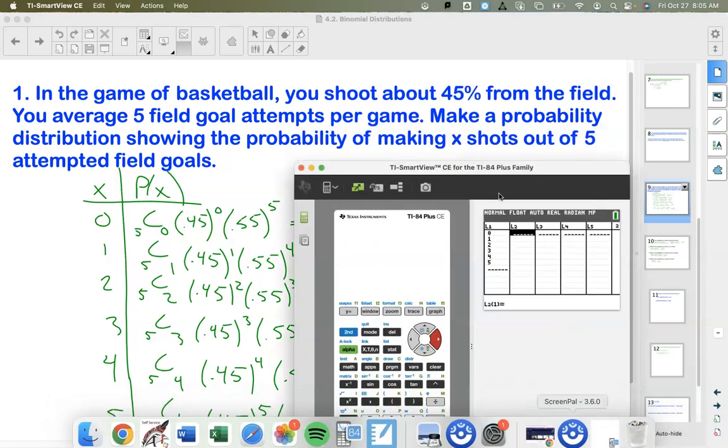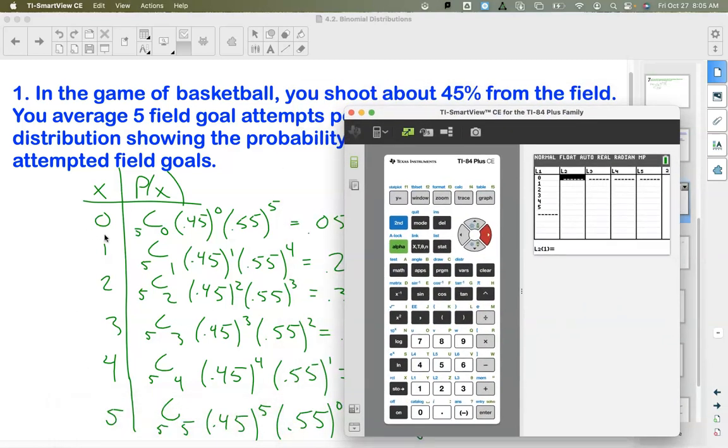But let me get my calculator open. When I look at this probability distribution table here that we made, I'm noticing I have a couple lists, and we're basically following a formula that gives us the probability for each number of makes. In list one over here, you can see I already put in the number of successes, zero through five. What I'm going to do is tell list two to generate these probabilities for me. I'm going to arrow up onto list two and hit enter. Now this is where I can type in a formula. How do we find the probability for the number of successes, x? Well, first off, we take a combination.